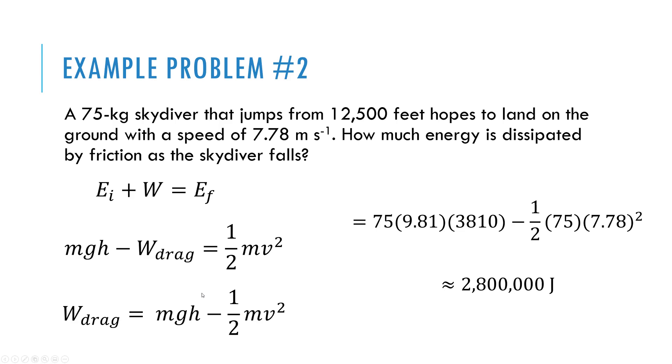So I can manipulate this to solve for how much work is done by the drag force. It's just a difference in energy from what I start with and what I end with. And amazingly, 2.8 million joules of energy are dissipated by friction, thankfully. If you had 2.8 million joules of kinetic energy and you hit the ground, that again is not a good thing. So we can solve for the work this way.